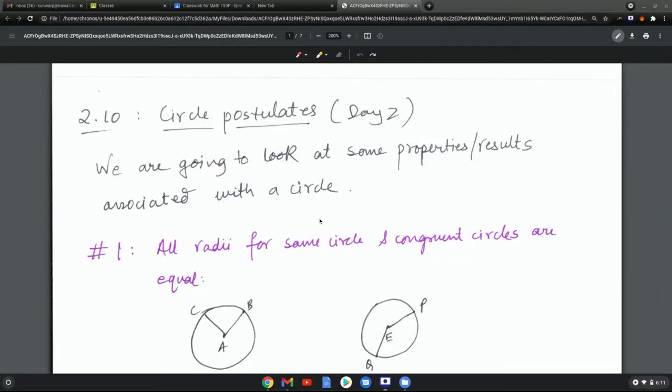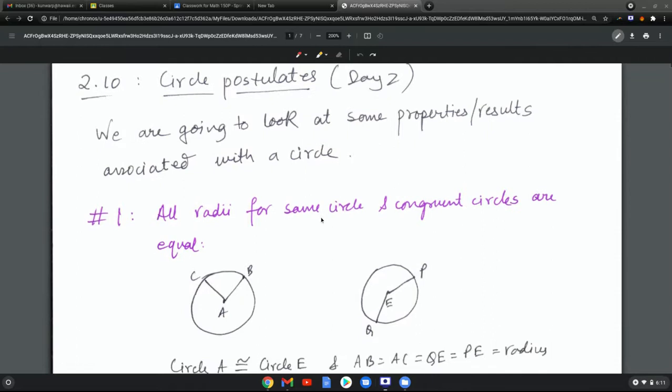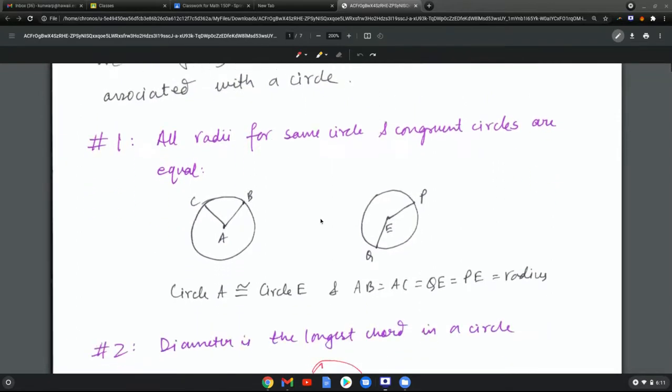In the day one material, we looked at circles and the parameters defining a circle. Now we're going to look at some properties or results associated with a circle, for example the first one.